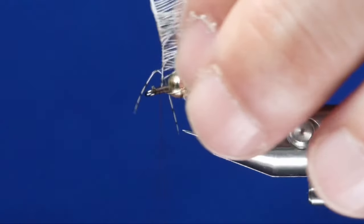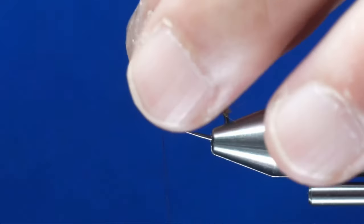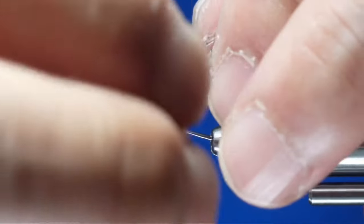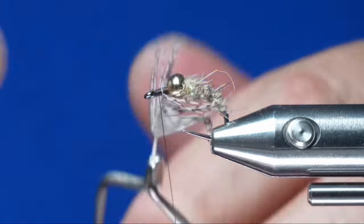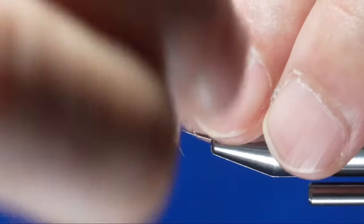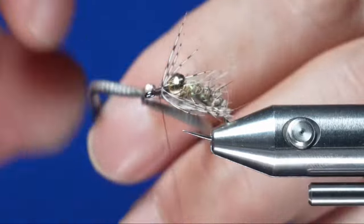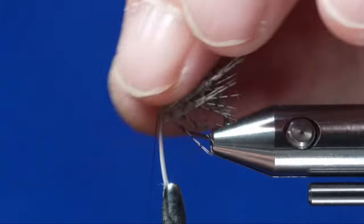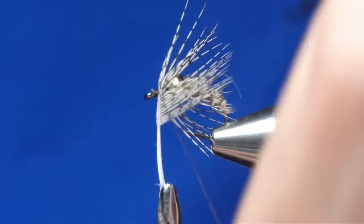Take your fingers, wet the hackle, and push them towards the bend of the hook. And then we're going to do one and a half to two turns of the hackle in front of this bead, and then tie it off.